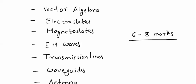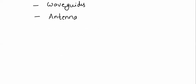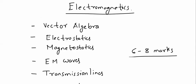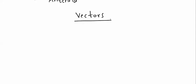Let us start with Vector Algebra. Without studying vectors, one cannot imagine studying Electromagnetics, because it is very difficult to understand the physical significance of the terms which are there in Electromagnetics. Please study Vector Algebra carefully first and then go for Electromagnetics.